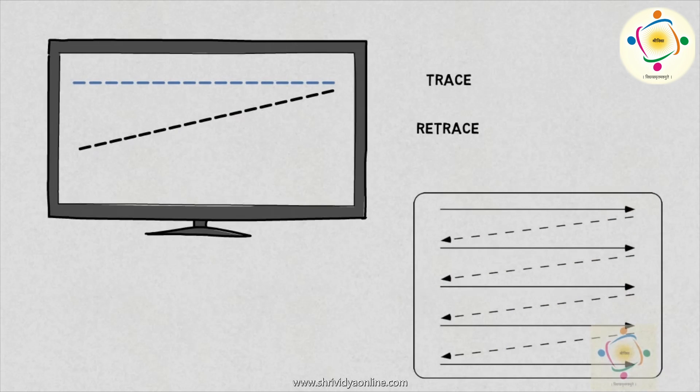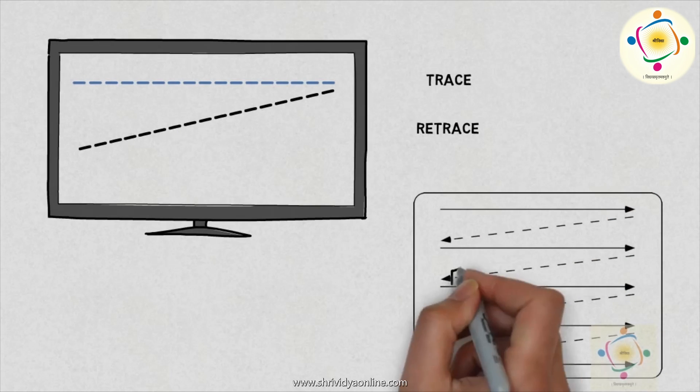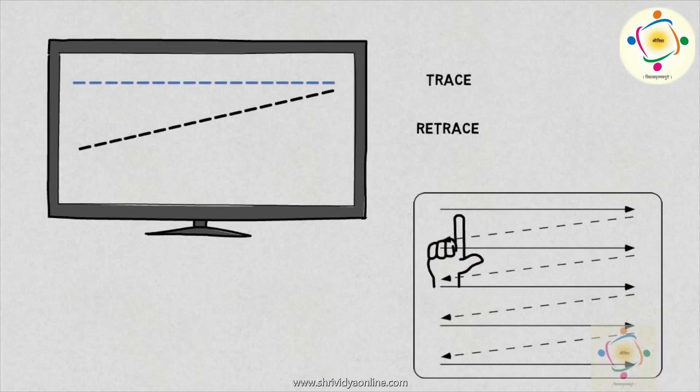The action is similar to reading a book. When we read any written information, we move from left to right and come back again to the left. The action of electron beam is the same, so naturally trace time is more than retrace.